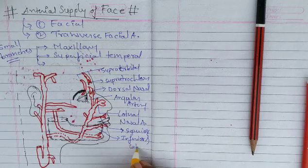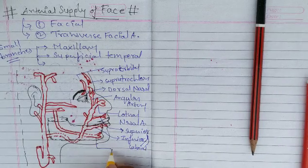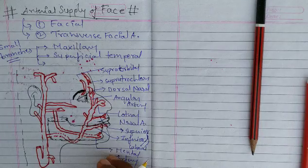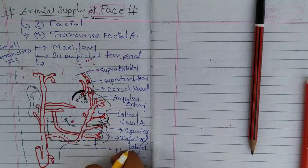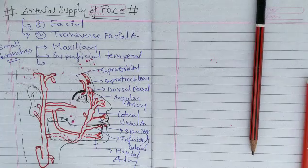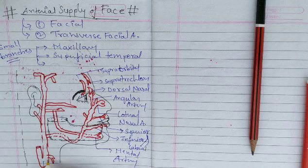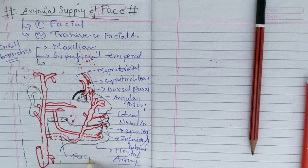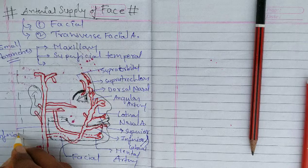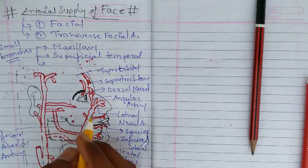This is the superior labial and this is the inferior labial. Both are labial arteries — superior labial and inferior labial. This is the mental artery. This is the inferior alveolar artery. This is the maxillary artery.